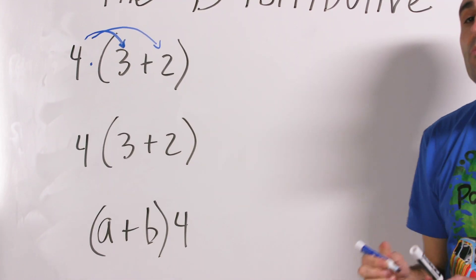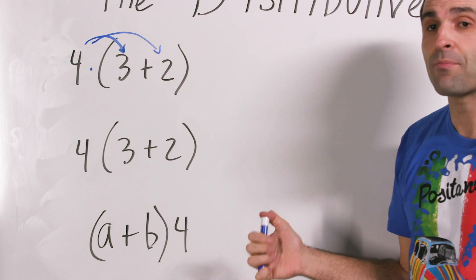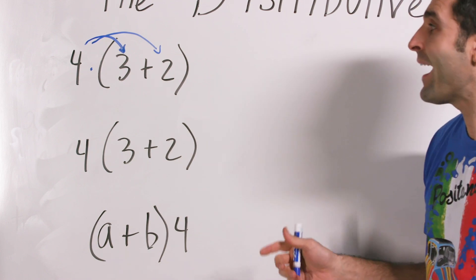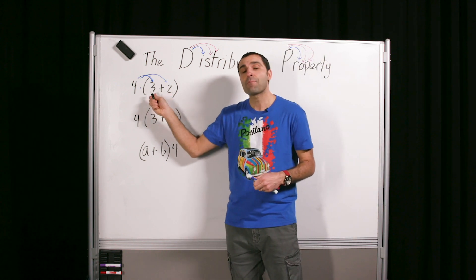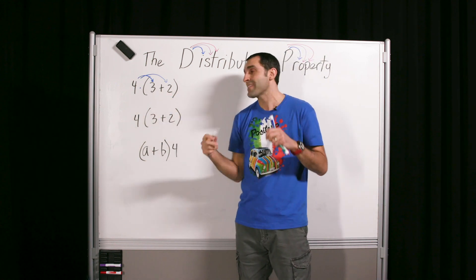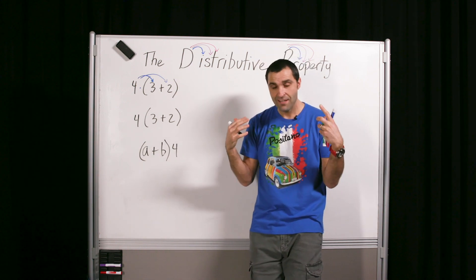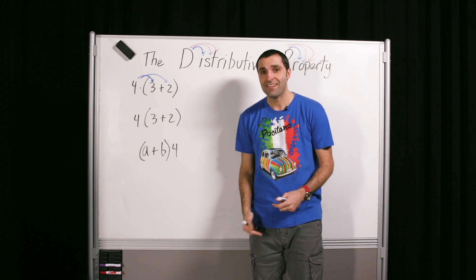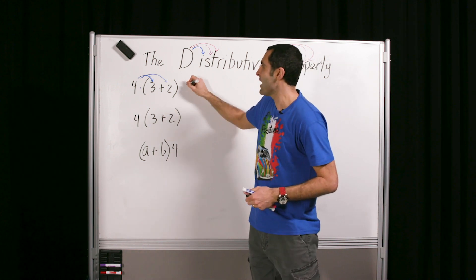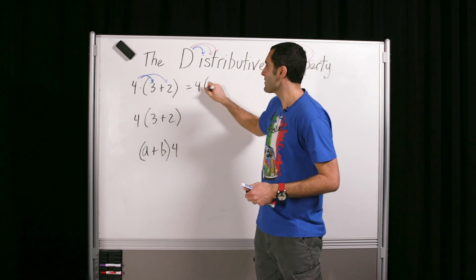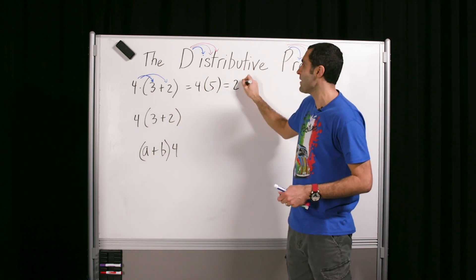But before we get carried away with this distributive property, some people forget about order of operations. Let's just keep our eye on the prize here. And by order of operations, we need to do what's inside the parentheses first, simplify inside, and then we'll look outside. Kind of like life. Simplify in here, then look out here. So what's inside? Three plus two. Five. So that's four times five. And four times five is twenty. Boom.